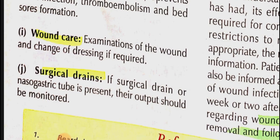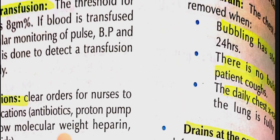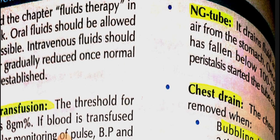For surgical drains: if there is an NG tube, monitor its output. If output is less than 100–200 ml per day and peristalsis has resumed, the tube can be removed. For chest drains, remove when there is no bubbling for 24 hours and daily chest X-ray shows lungs are fully expanded.